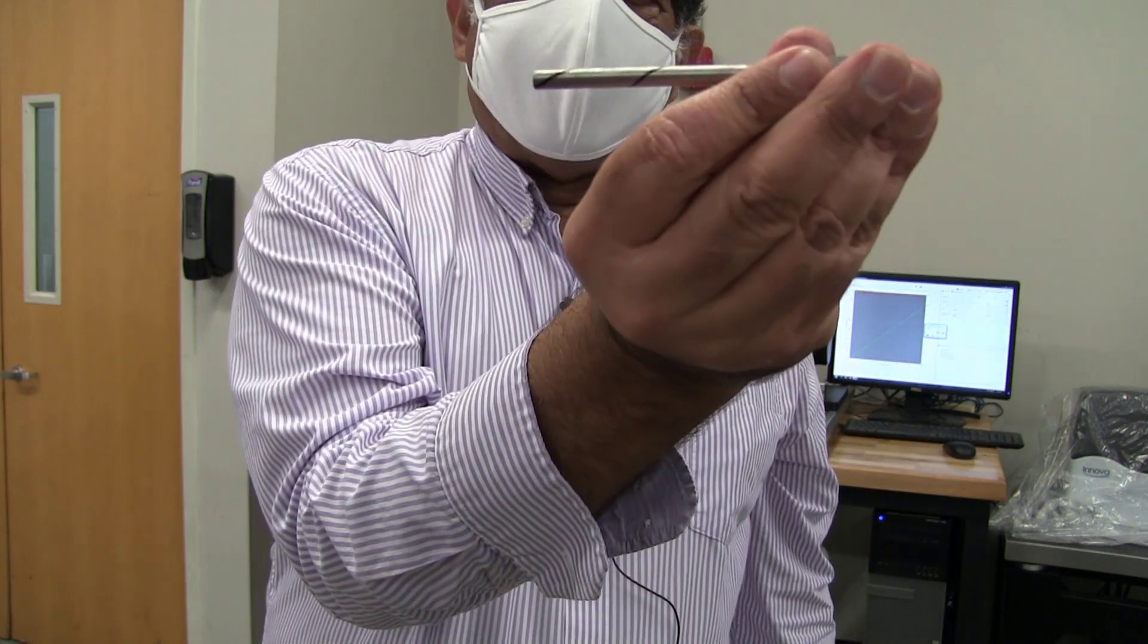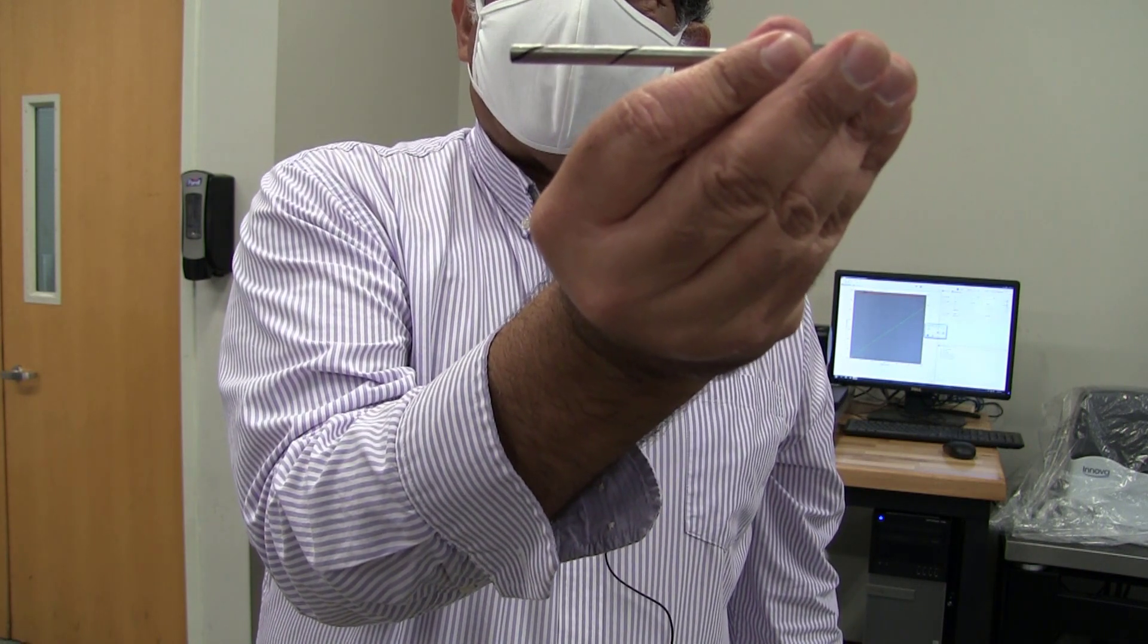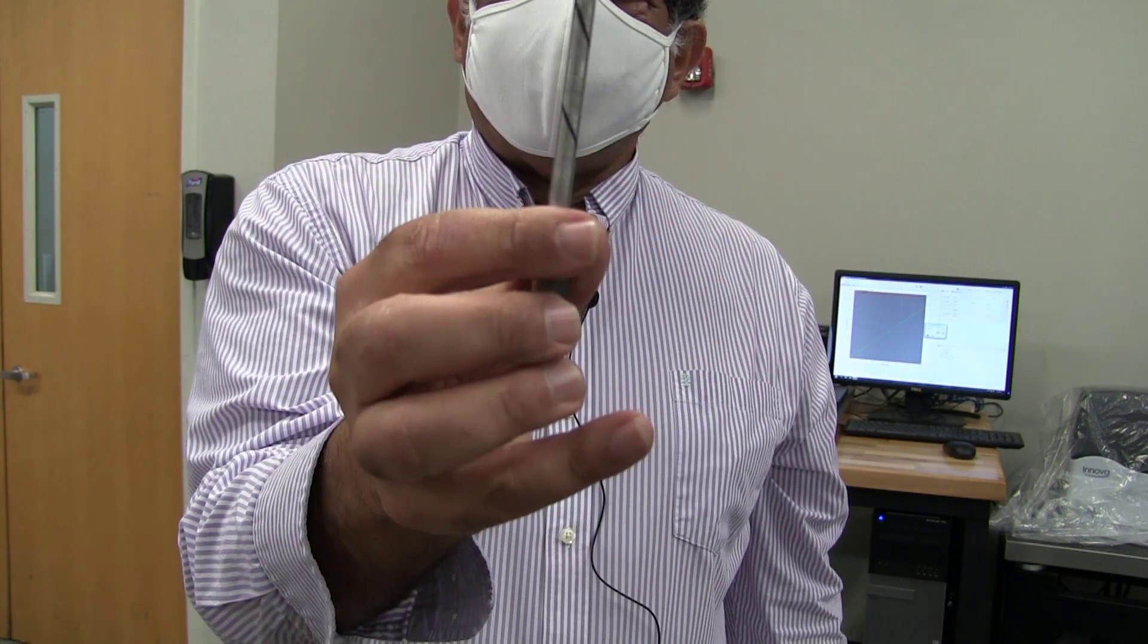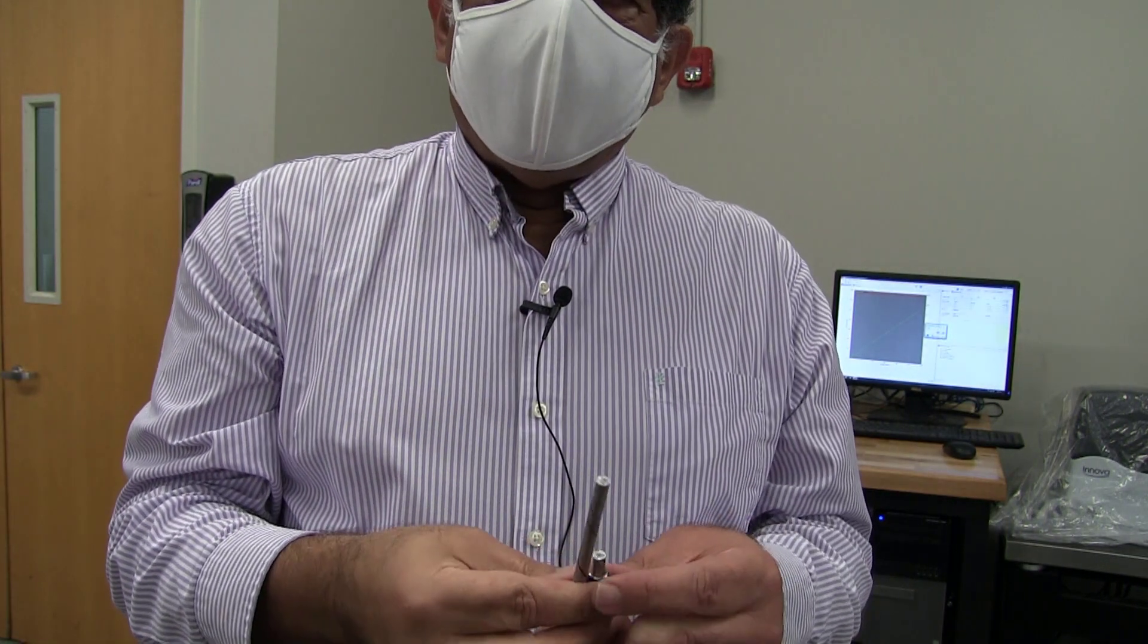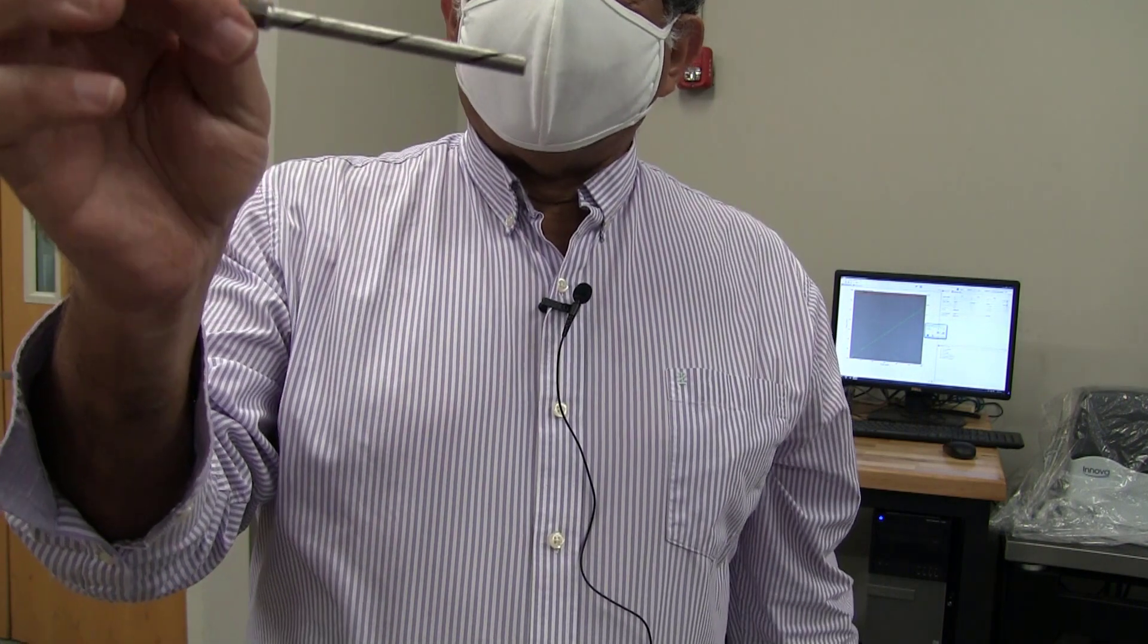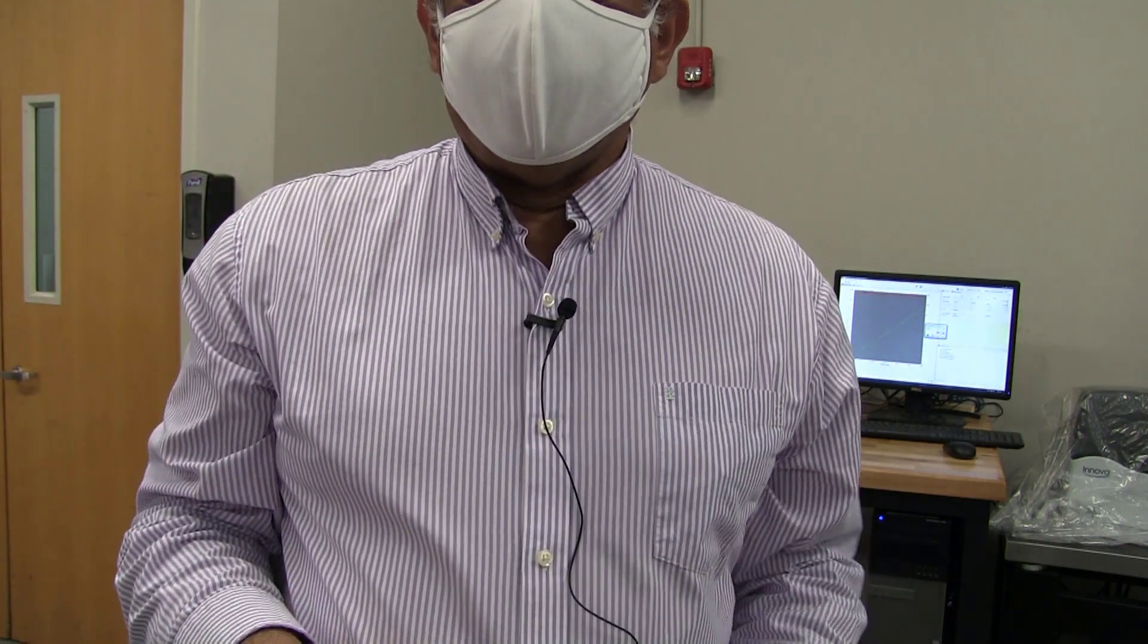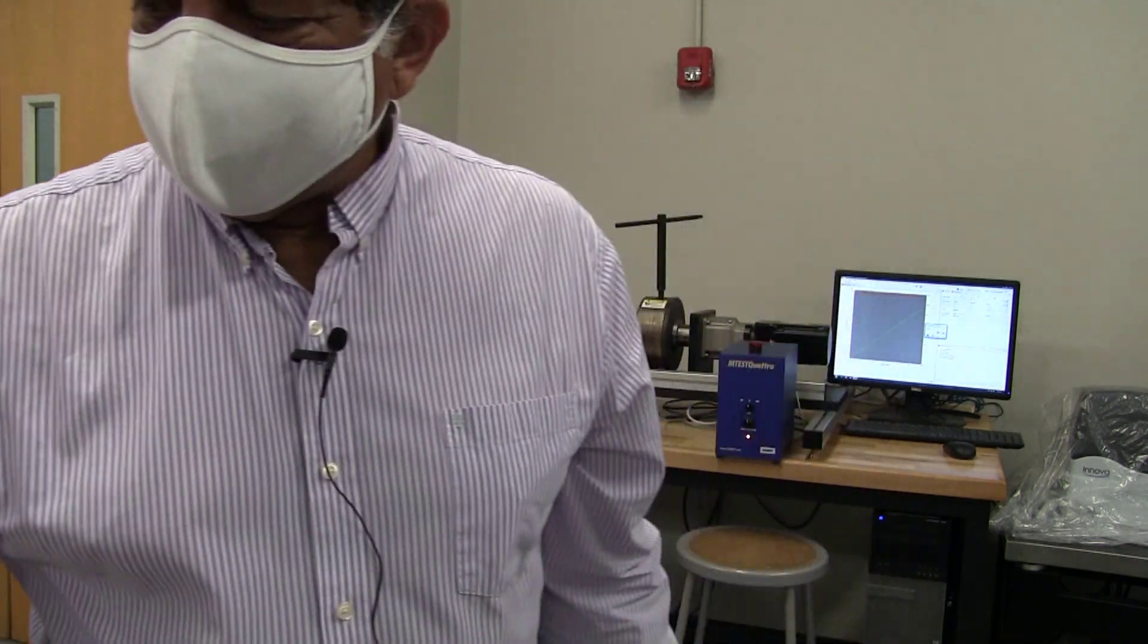You notice that the cross section of the specimen doesn't change in torsional fracture the way that it does in tensile fracture, and you might want to think about what that means about the different modes of fracture, and that might inform your discussion about why it is that it was so much more ductile in torsion than it was in tension. Good luck analyzing the experiment.